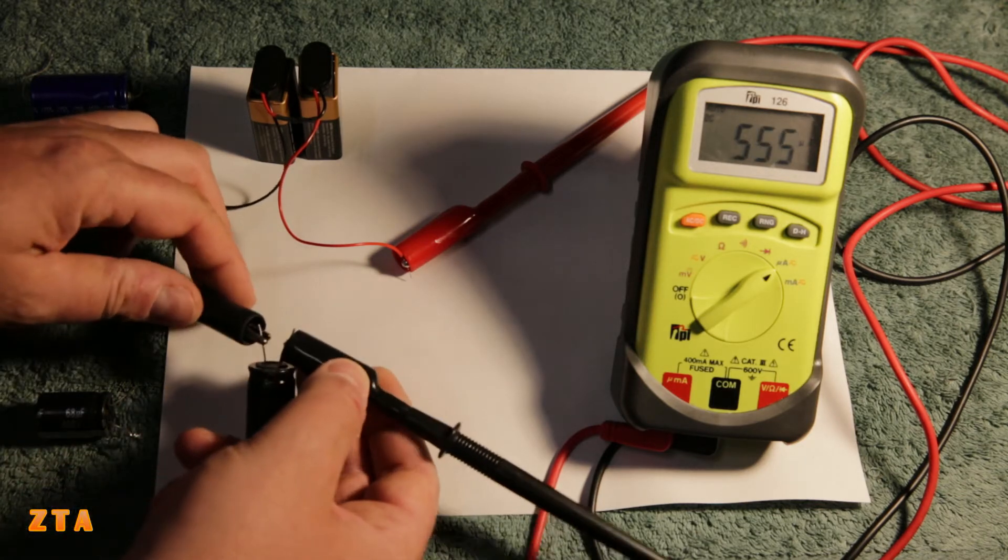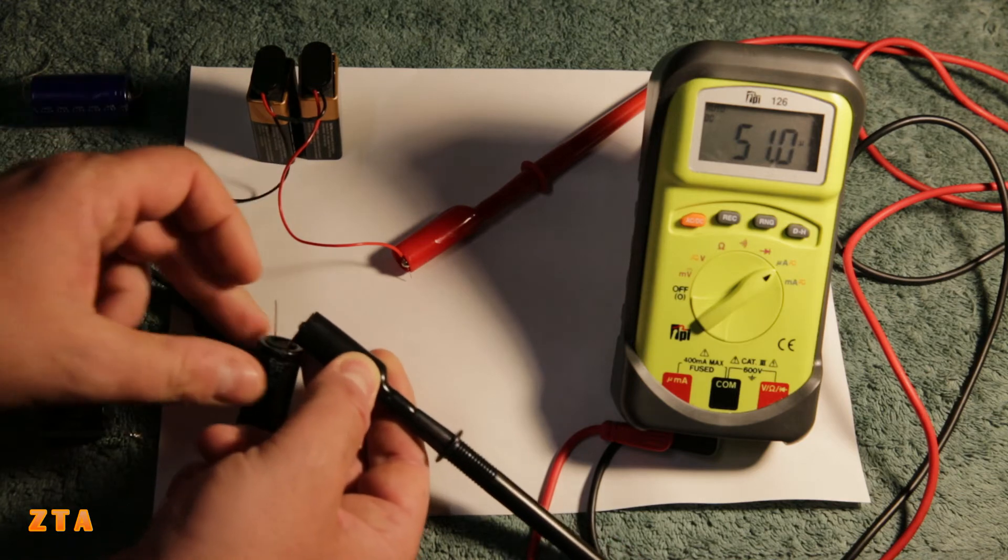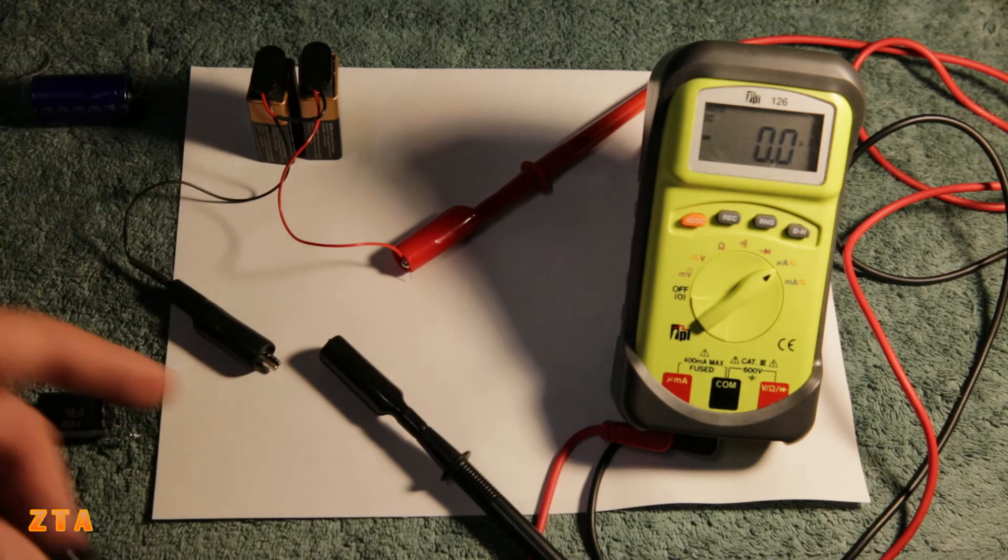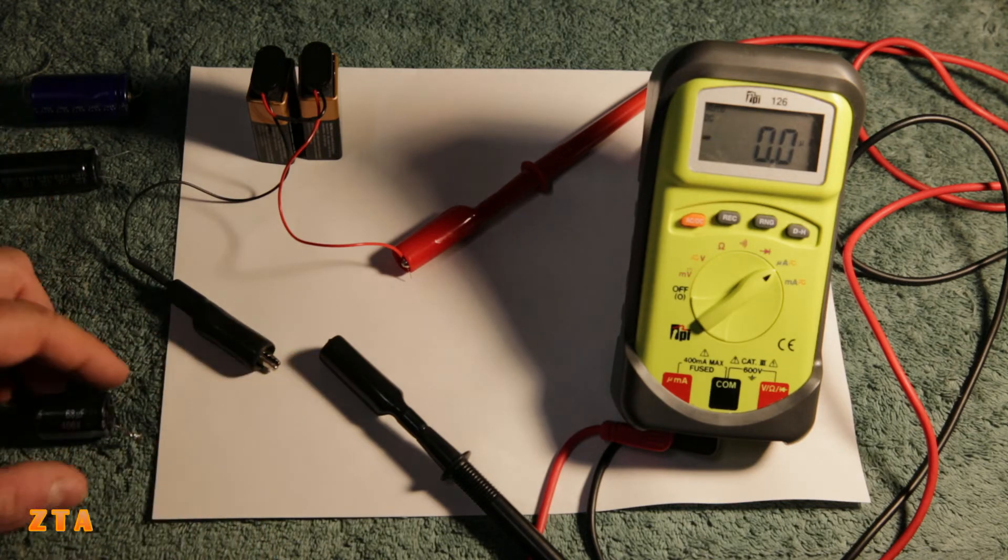If you're measuring this in a circuit, you just have to unsolder one lead of the capacitor. No need to take out the whole capacitor. Just unsolder one lead and hook up these two probes to the capacitor.